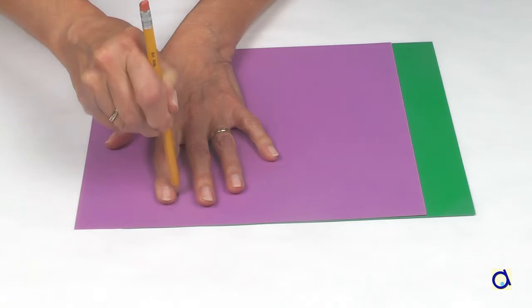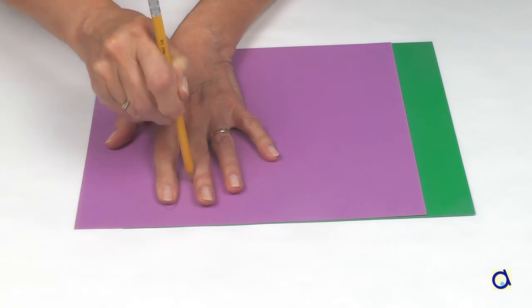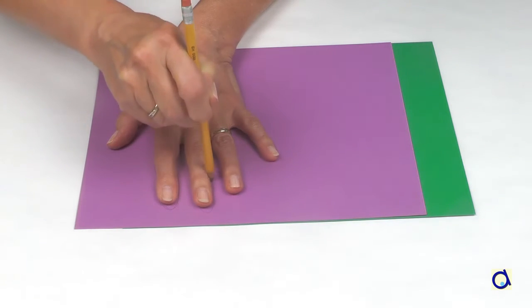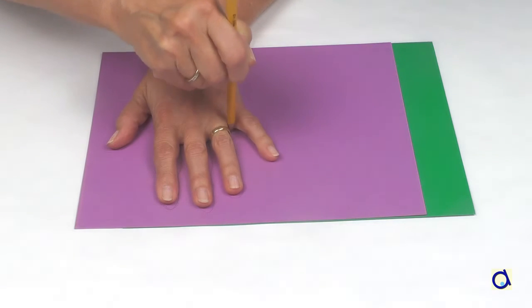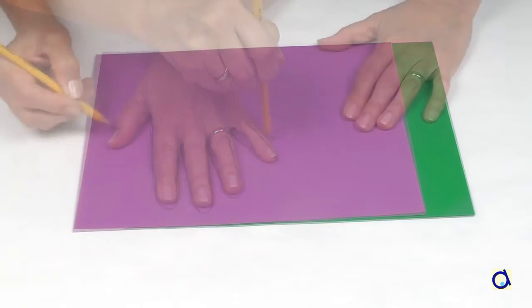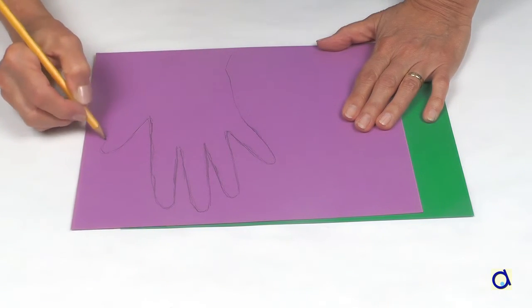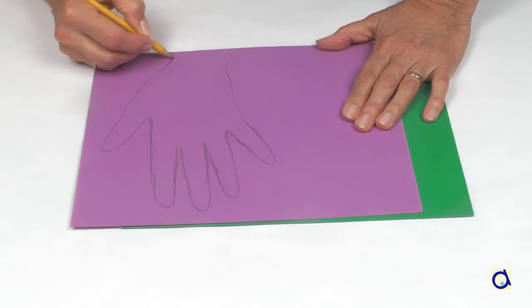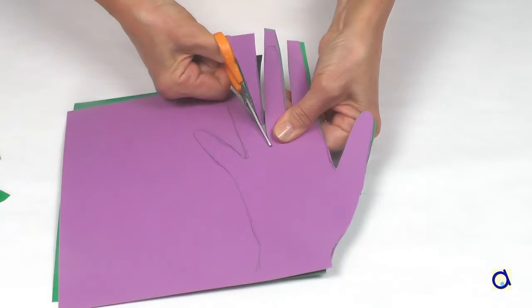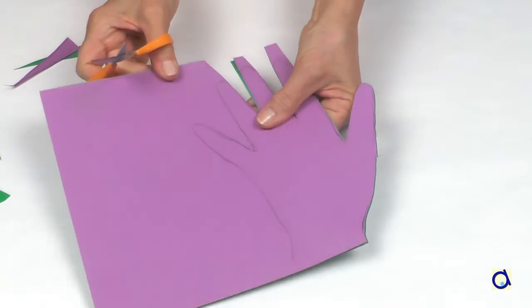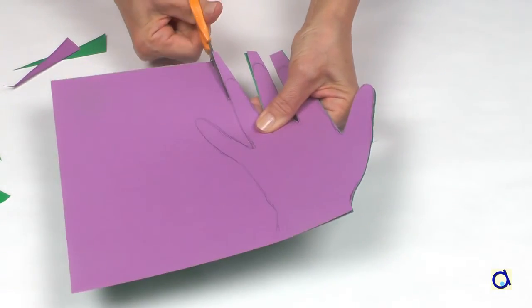If you do not have access to felt and velcro or it is too expensive, take colored construction paper and proceed as for the felt. Start by drawing a hand on a sheet of paper. Either fold the sheet in half to cut out both hands at once, or take another color and cut out the two hands in two different colors.